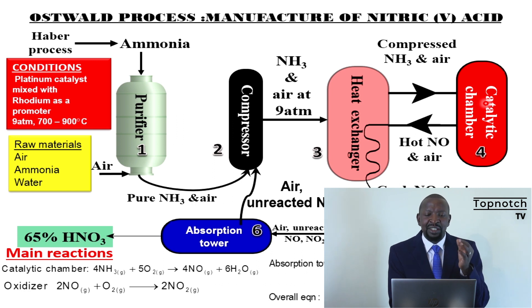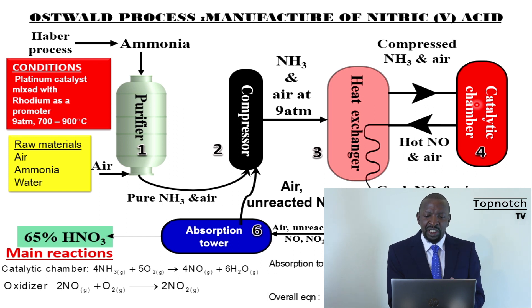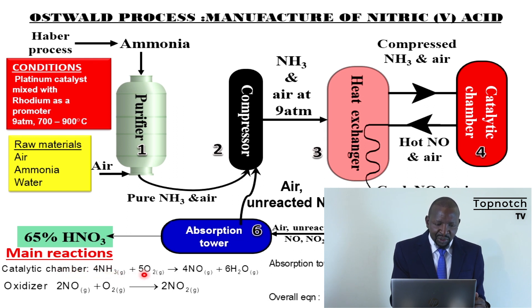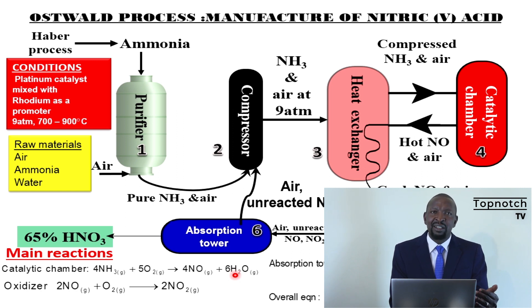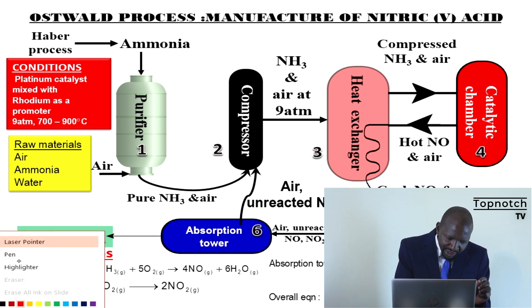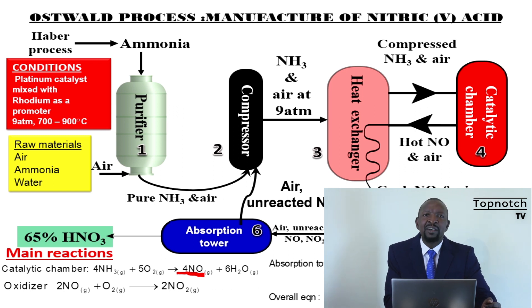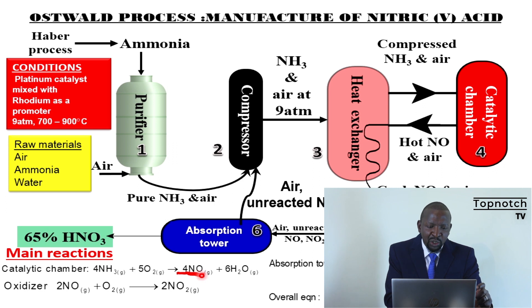In the catalytic chamber, the gases have been purified, compressed, and preheated, and we have the platinum-rhodium catalyst. All conditions for reaction are ready. The first reaction occurs: the catalytic oxidation of ammonia. Ammonia reacts with oxygen to form nitrogen monoxide (NO) and steam. We get steam because the temperatures are very high — around 700 degrees Celsius. Many students pick the product as nitrogen dioxide (NO₂), but it is nitrogen monoxide (NO) that is the first product formed here.